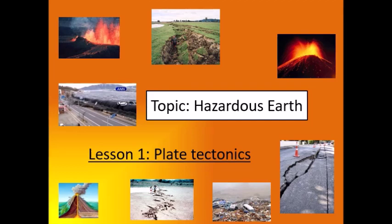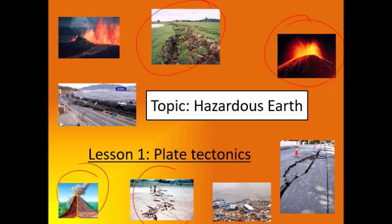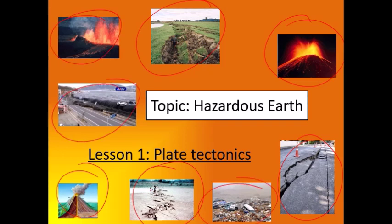If you look at some of the pictures on the slide you might think some of these things are a bit familiar. We've got some volcanic eruptions, we've got some earthquakes that have clearly happened here and made the ground shake, and there we've got some hazards that we're going to produce from that — another volcanic eruption at the top there, and then these two pictures here are showing us tsunamis. We're going to get onto that throughout this topic.